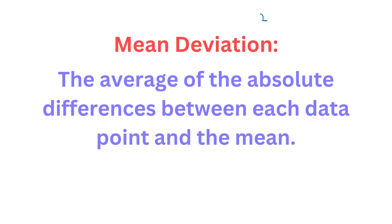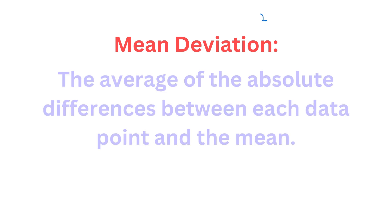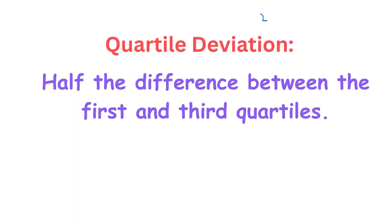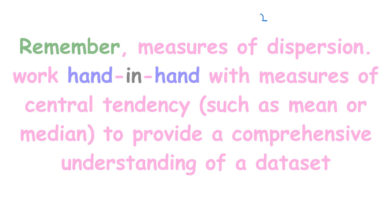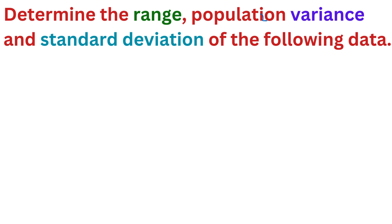Mean deviation is the average of the absolute differences between each data point and the mean. Quartile deviation is half the difference between the first and third quartiles. Remember, measures of dispersion work hand-in-hand with measures of central tendency, such as mean or median, to provide a comprehensive understanding of a dataset.